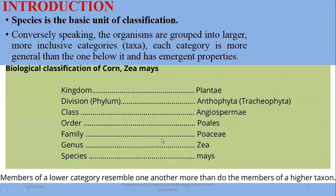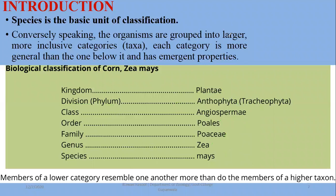Take corn or maize as an example. Its kingdom is Plantae, division is Anthophyta or Tracheophyta (the term 'division' is more commonly used for plants instead of phylum), class is Monocotyledonae, order is Poales, family is Poaceae, genus is Zea, and species is mays. These are the classification units for plants.